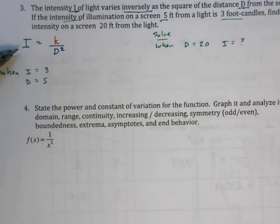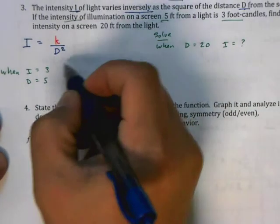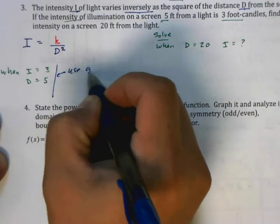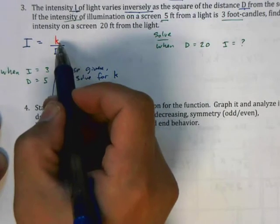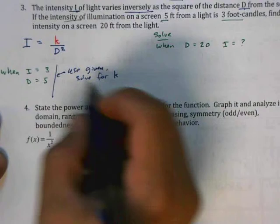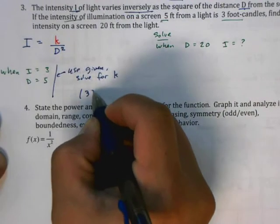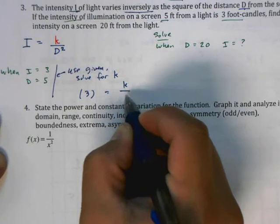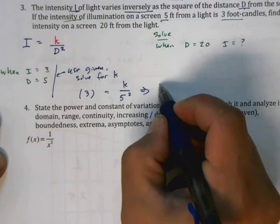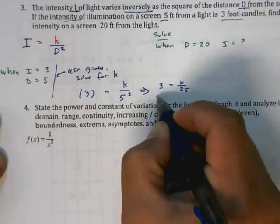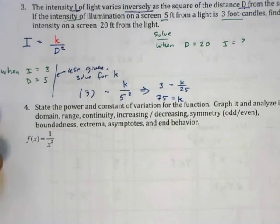You have this equation here with three unknowns and you're going to need to solve for at least one of them. We're going to first use our givens here and solve for k, the constant of variation. We're going to substitute: 3 equals k over 5 squared. This means 3 equals k over 25, so 75 equals k.